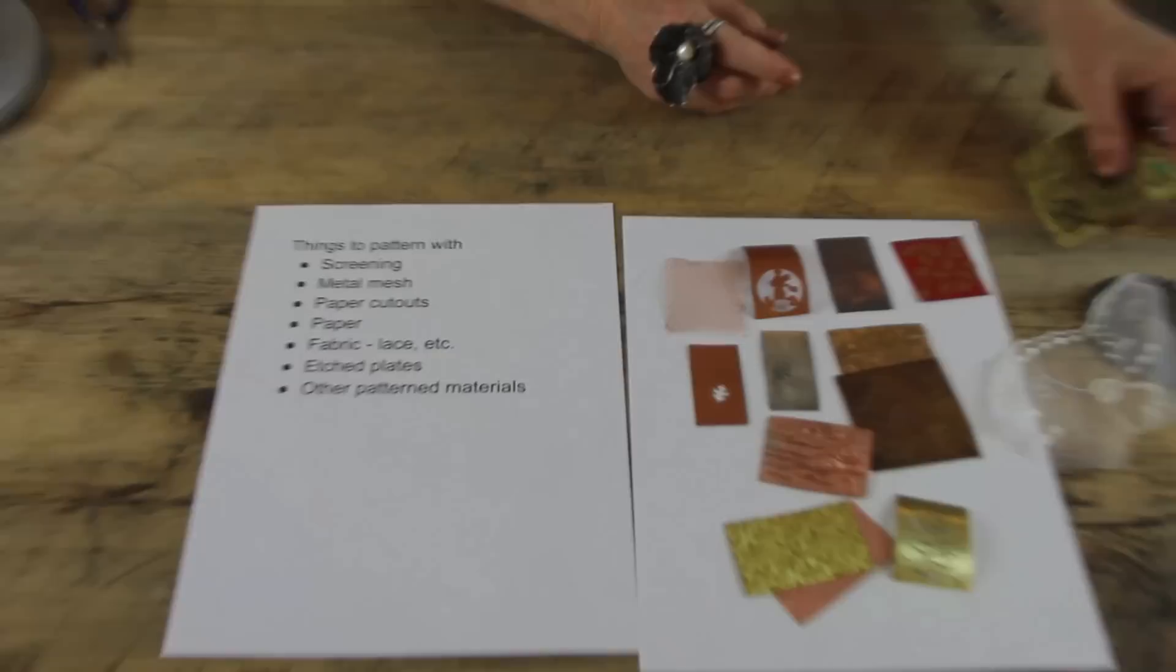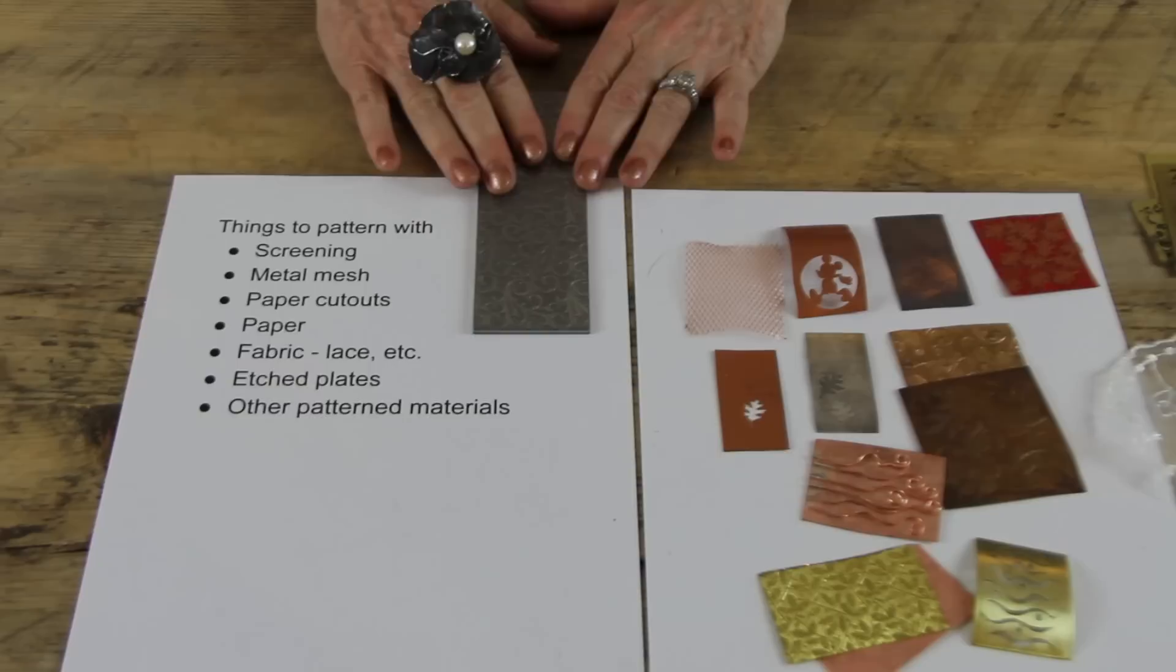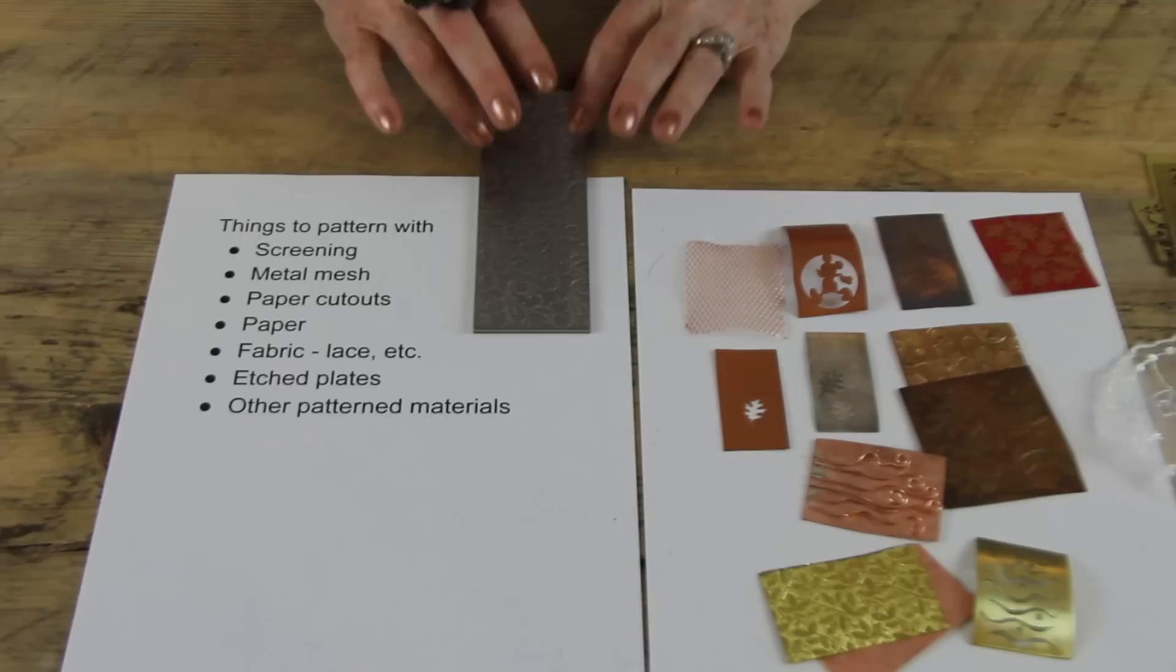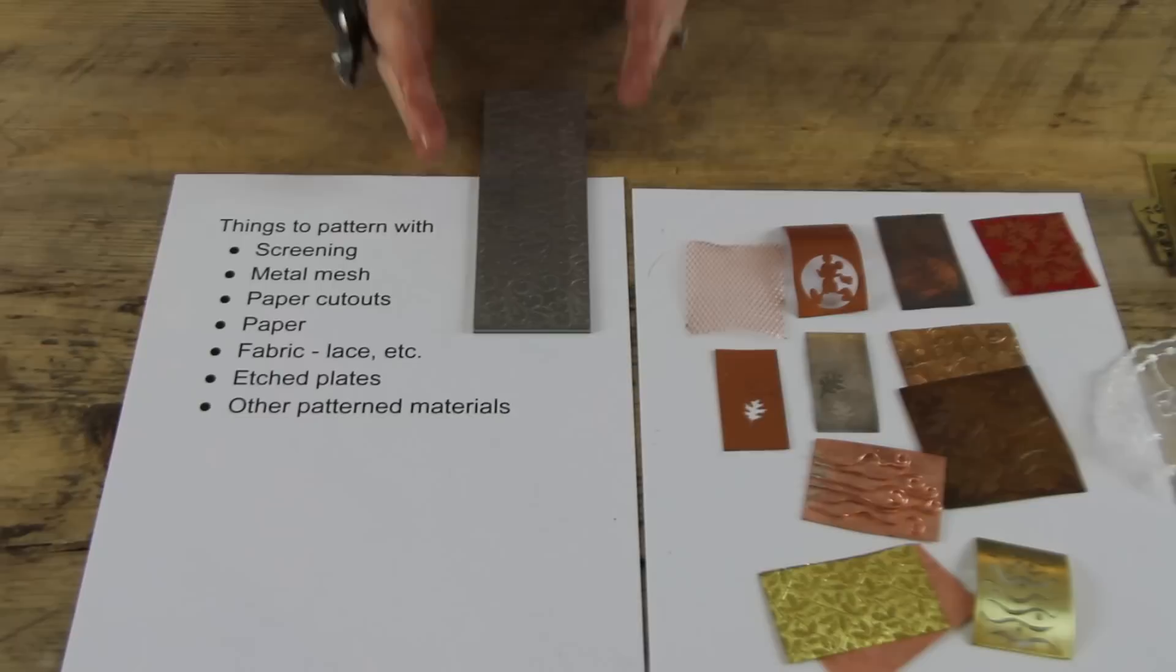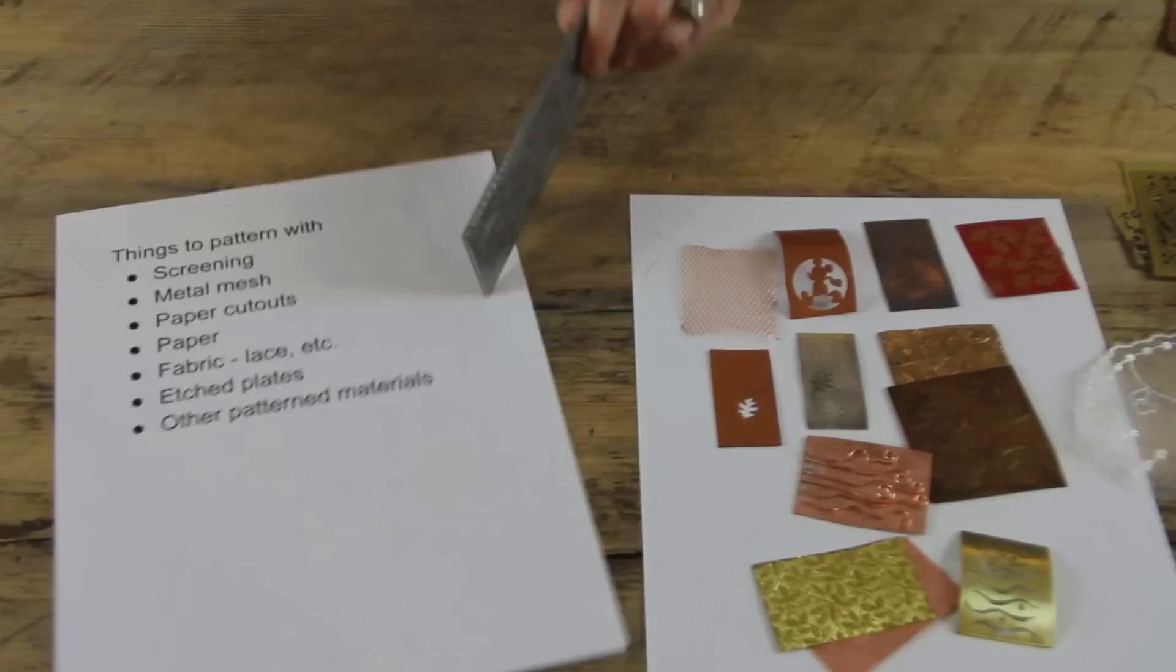There are these embossing plates that are used in the paper craft, scrapbooking industry. These will work. They won't last as long as something that's as heavy gauged as this is. But they will distort somewhat, but you can get several uses out of them. They're already sawn out, so you don't have to pierce them. Then we have Bonnie Doon, which makes these awesome plates that are for a rolling mill and for the hydraulic press.